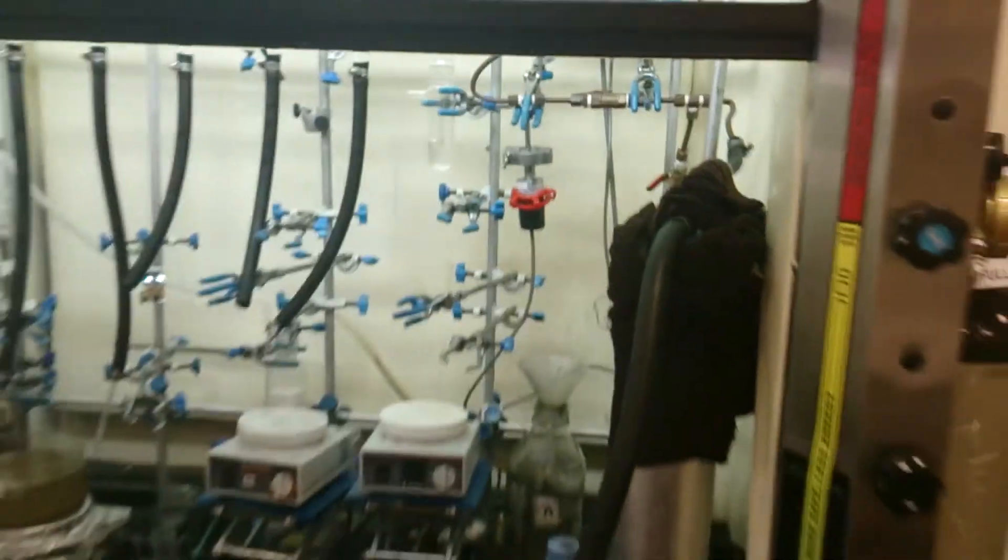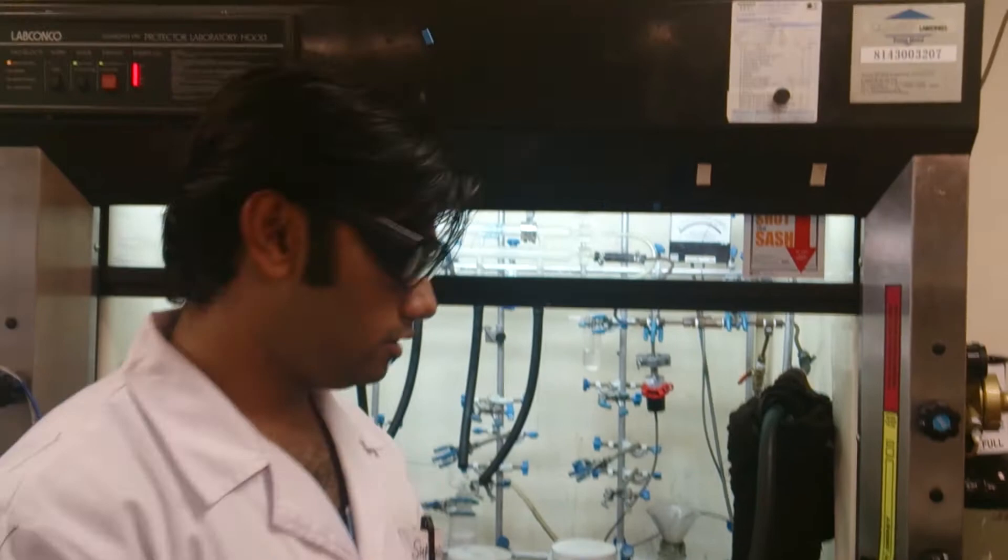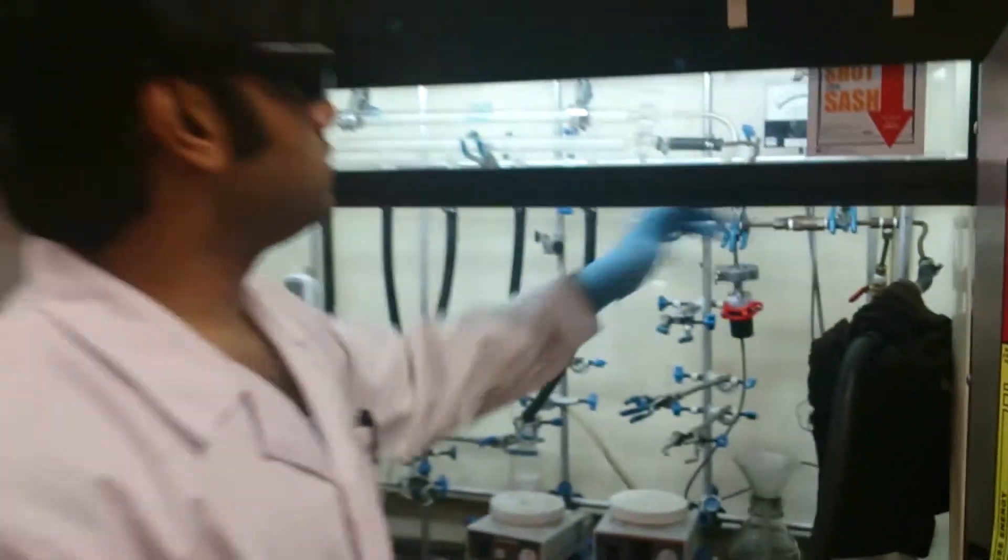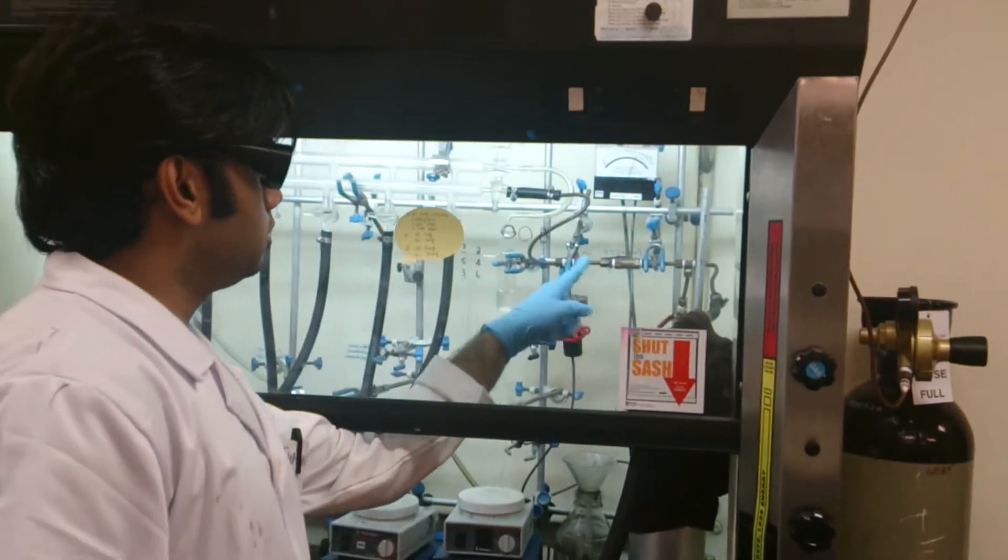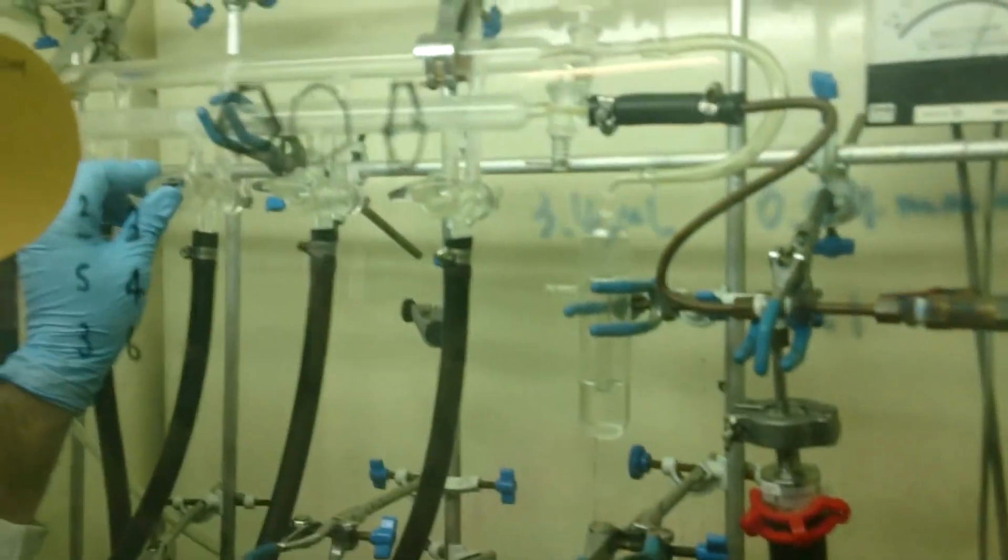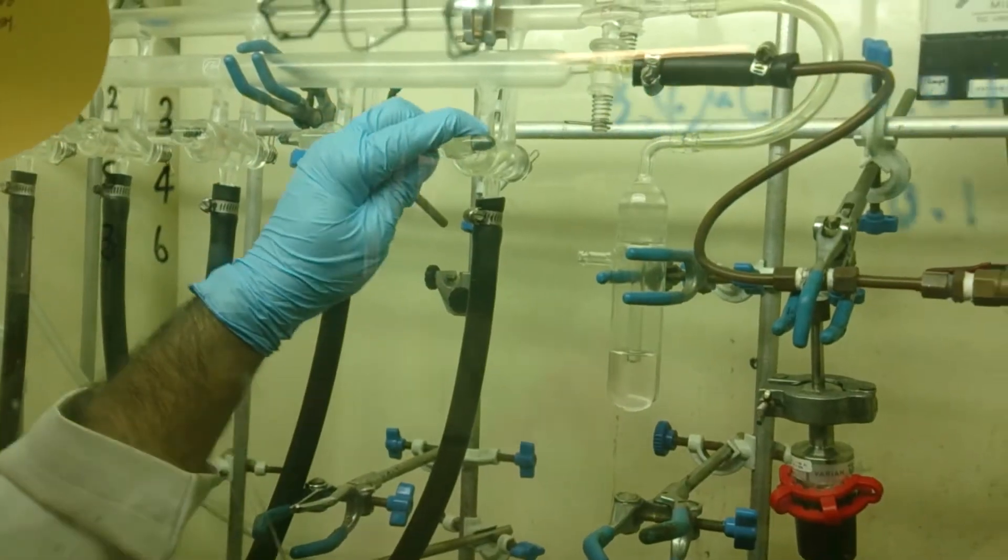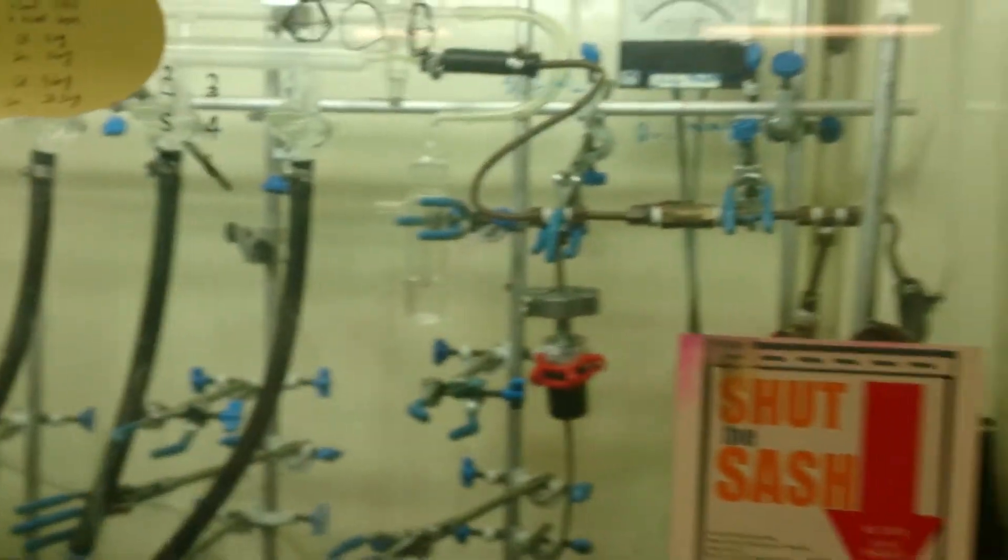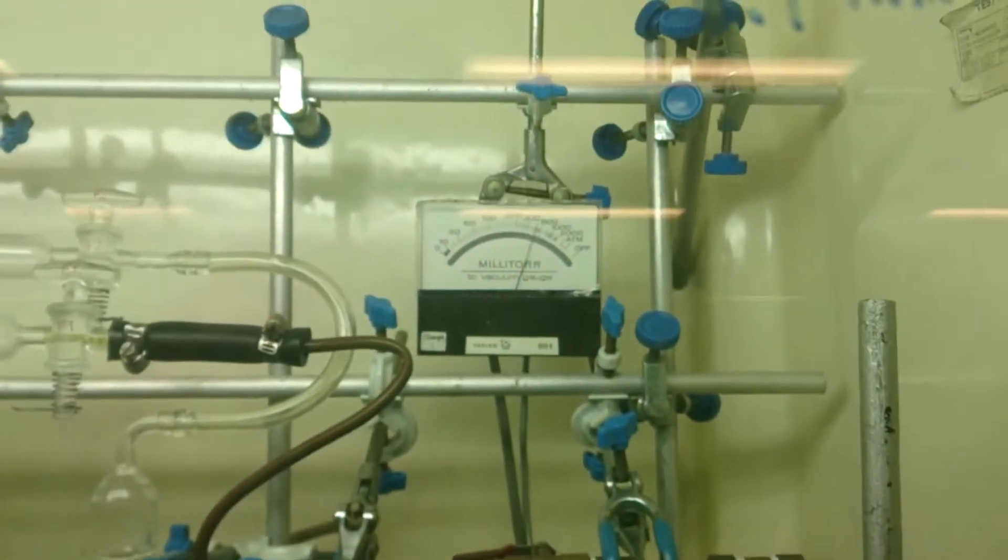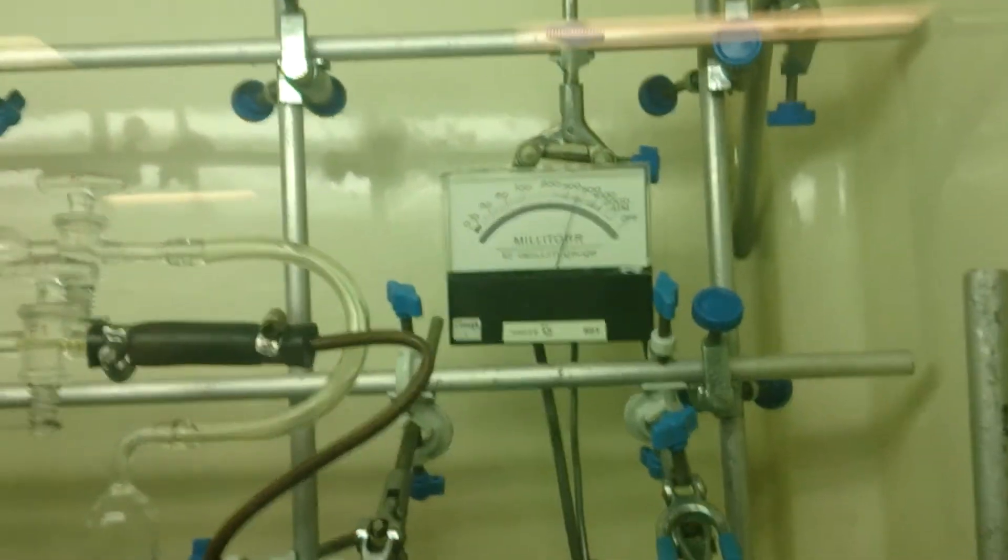So this is a typical setup of the cold trap. Now as we can see that as the copper tubing are connected to the Schlenk line, we can use these openings to put on the vacuum in whichever tube we want to. And also you can see that the vacuum is going down. It will take some time to go, it can go up till 100 millitorr.